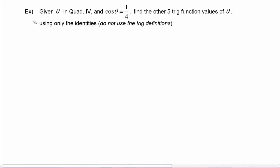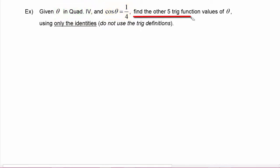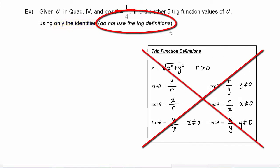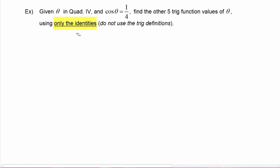In this example, we're given that theta is in quadrant four and that cosine of theta is equal to one fourth. Using those two facts, we can find the other five trig function values of theta using only the identities. We're not going to use the trig definitions involving x, y, and r — we're going to practice using the identities we've just learned.